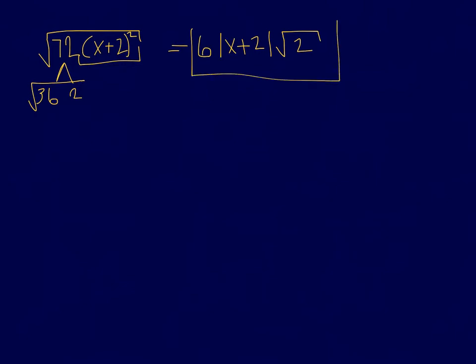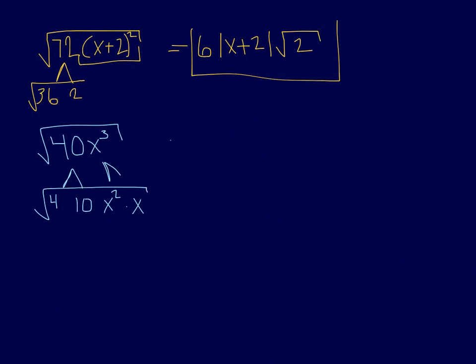We're simplifying the inside of the radical. For the square root of 40x cubed: 40 is 4 times 10, and 4 is the perfect square. Note that if you find one perfect square, there could be more, so check that 10 can't be factored further with any perfect squares. x cubed is x squared times x. Taking the square root: the square root of 4 is 2, the square root of x squared is the absolute value of x (because it's an even root), and inside the square root we're left with 10x. So the answer is 2 times the absolute value of x times the square root of 10x.